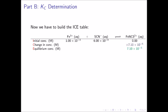We can now determine the changes in each concentration. The ferric thiocyanate complex begins at 0 molar and reaches 7.10 times 10 to the negative 5 molar at equilibrium, so the change is an increase of 7.10 times 10 to the negative 5 molar. Looking at the stoichiometry, everything is 1 to 1. For every mole of complex formed, we consume 1 mole of iron 3+ and 1 mole of thiocyanate, so their changes have the same magnitude but a negative sign to indicate they are decreasing.